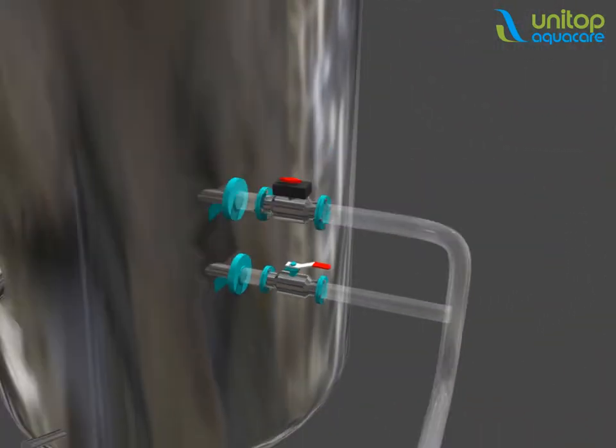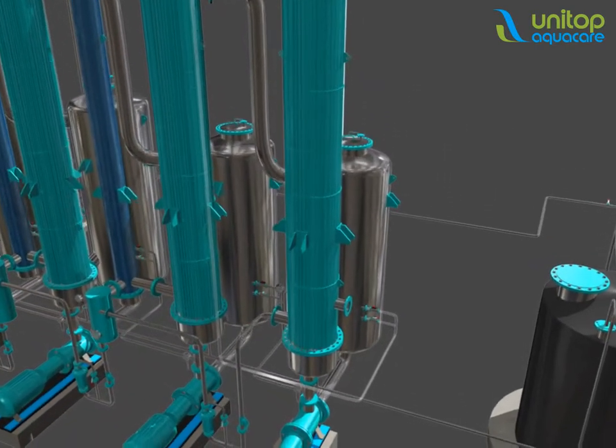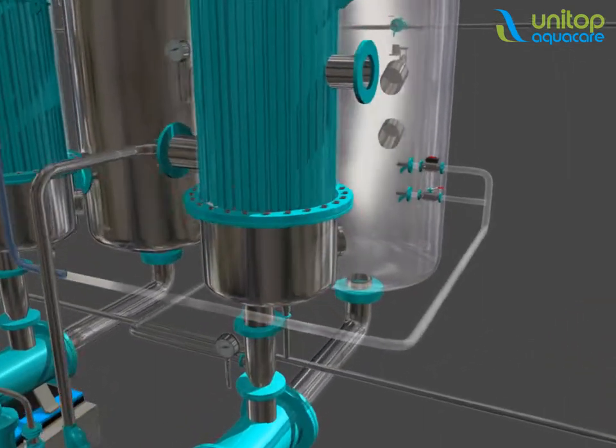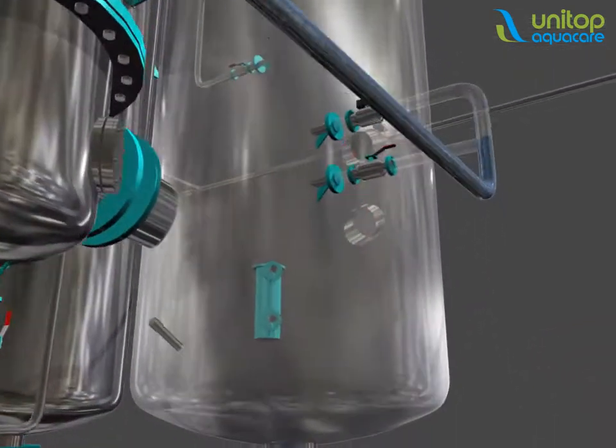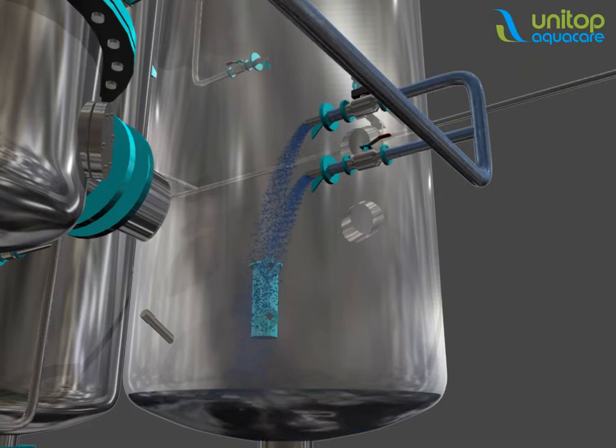The preheated feed is taken to the first effect. The feed is regulated with the help of actuator-operated valves and PLC-operated level sensing devices, which regulate the feed to a desirable level.